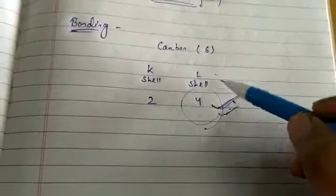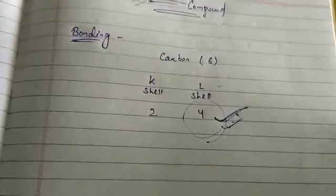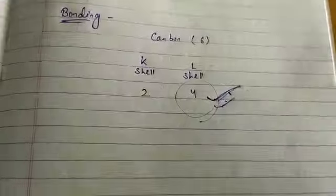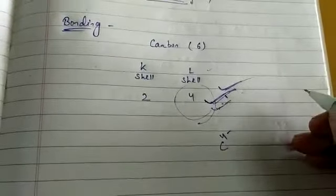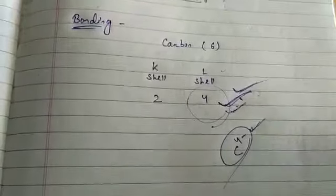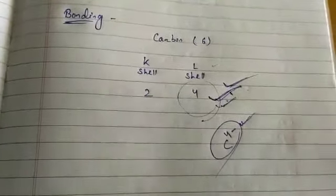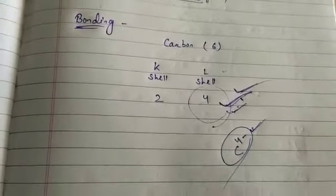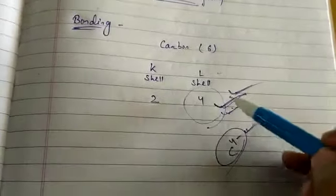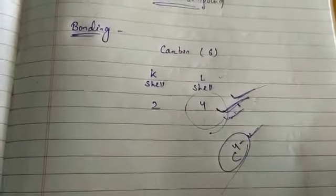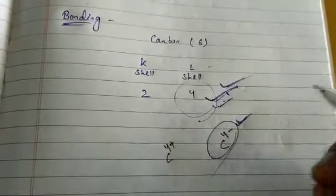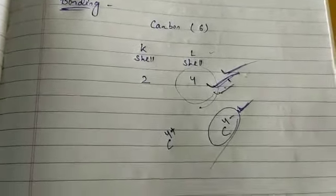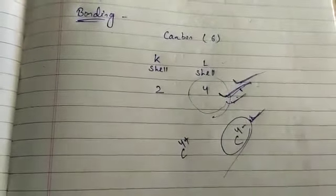Carbon has to gain or lose 4 electrons to get the noble gas configuration. If it were to gain 4 electrons, it would form C⁴⁻, a negative ion. But it would be difficult for a nucleus with only 6 protons to hold on to 10 electrons, that is 4 extra electrons — so that is not possible. Alternatively, if it loses electrons, it would form C⁴⁺ cations, but it would require a large amount of energy to remove 4 electrons.